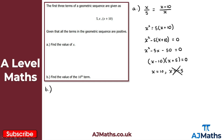For part b we find the 10th term using uₙ = arⁿ⁻¹. With x = 10, the first term a = 5, the second term is 10, and the third term is x + 10 = 20. We can see we're doubling each time, so the common ratio r = 2.